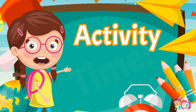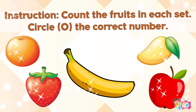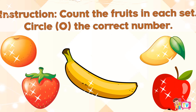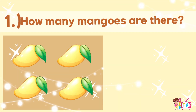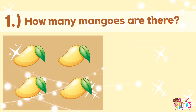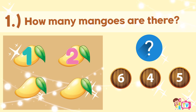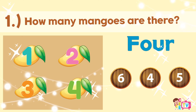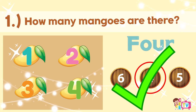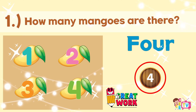Activity time! Count the fruits in each set. Circle the correct number. Number 1. How many mangoes are there? 1, 2, 3, 4. There are four mangoes. I will circle number four. You are correct. There are four mangoes.